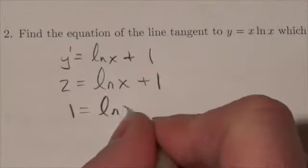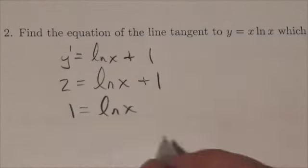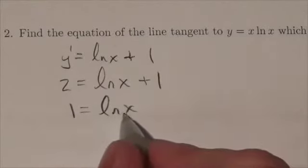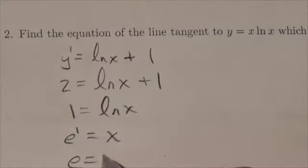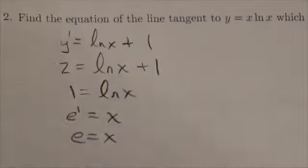1 is equal to the natural log of x. I'm going to convert the logarithmic form to the exponential form, so this will be e to the 1 equals x, which basically means x is equal to e.